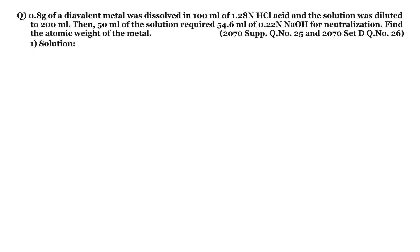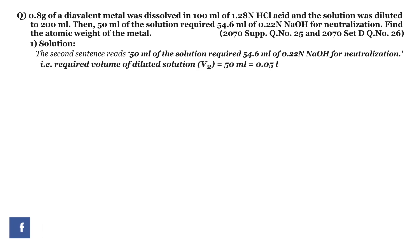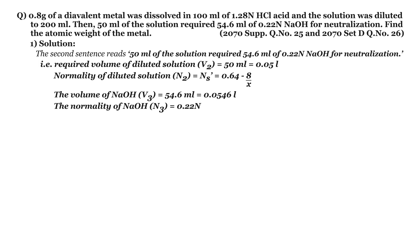Now let's analyze the second sentence. It reads: 50 ml of the solution required 54.6 ml of 0.22 N sodium hydroxide for neutralization. So the required volume of diluted solution V2 equals 50 ml or 0.05 liter; normality N2 equals Ns' equals (0.64 − 8/x); volume of sodium hydroxide V3 equals 54.6 ml; and normality of sodium hydroxide N3 equals 0.22 N. Since 50 ml of the diluted solution reacts completely with the sodium hydroxide, we apply the normality equation: N2·V2 = N3·V3.